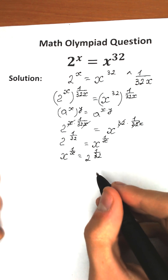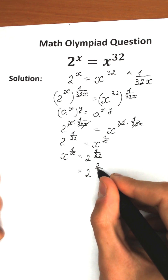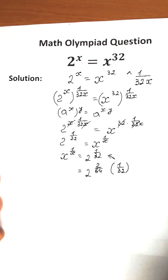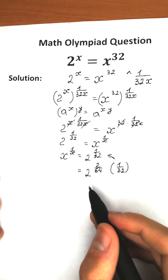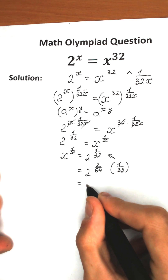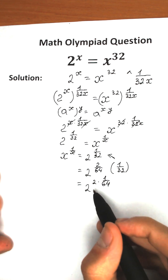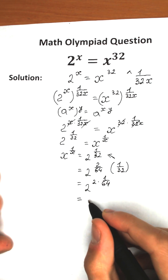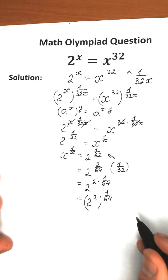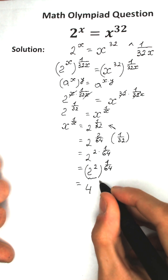Now let's use a great trick. Let's write 2 to the power 1 over 32 as 2 to the power 2 over 64 — absolutely the same, since 2 over 64 equals 1 over 32. Using our exponent property, 2 to the power 2 over 64 equals 2 squared to the power 1 over 64, which equals 4 to the power 1 over 64.